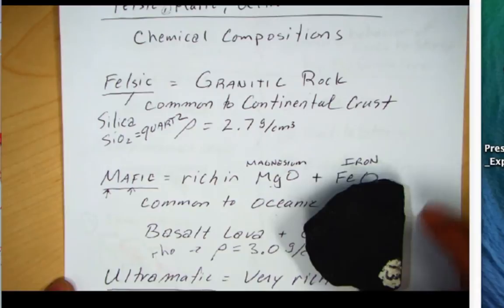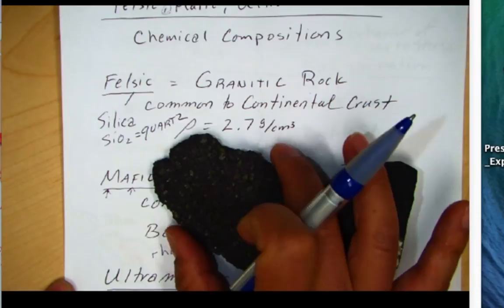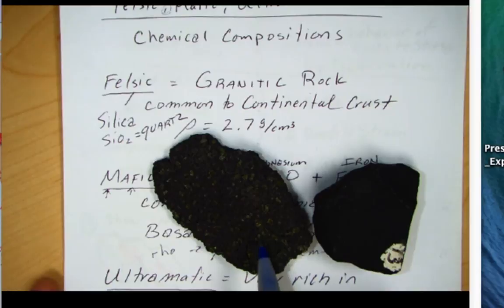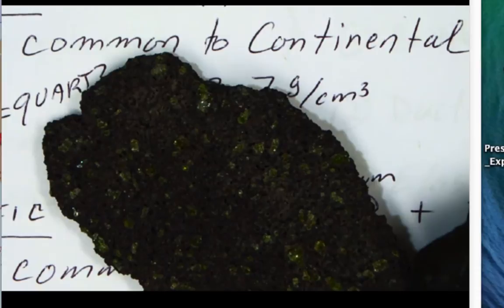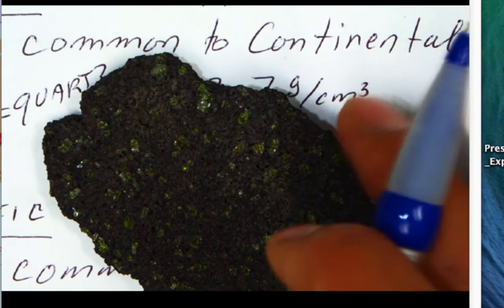Basalt is this dark volcanic rock. Here's some Hawaiian basalt from some of the recent lavas in Hawaii, and you can see it has nice olivine crystals. If we zoom in, you'll see it has a vesicular texture as well, where volcanic gas was escaping. So here's an olivine basalt — there's a nice image of it.